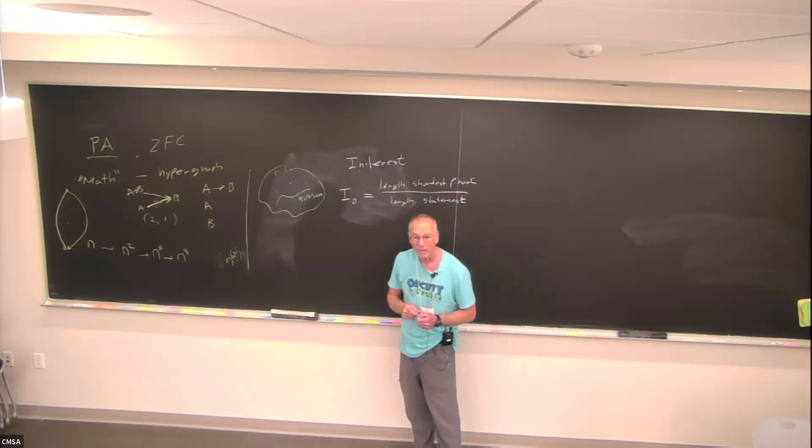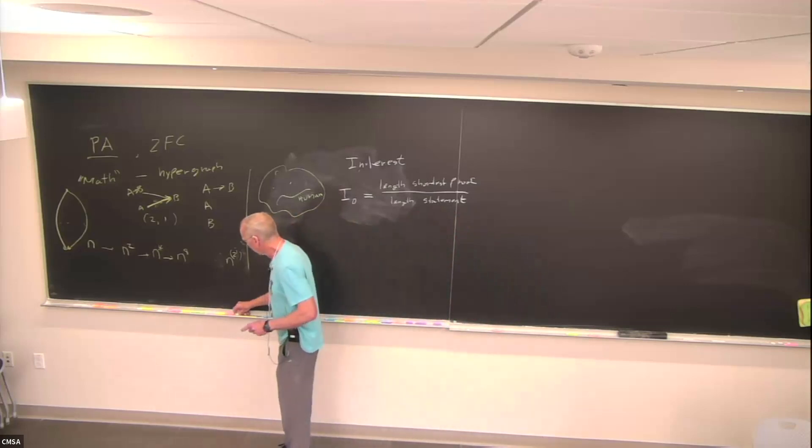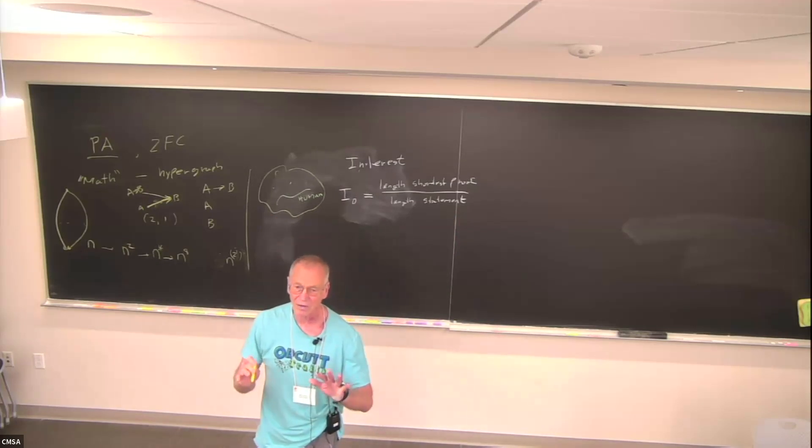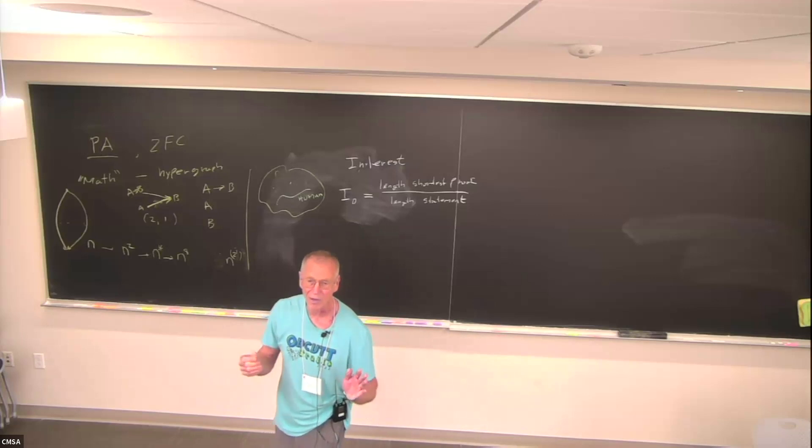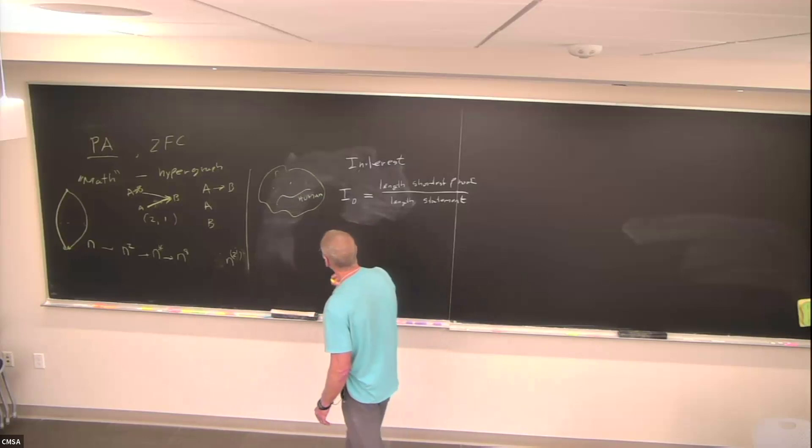So when you say shortest proof, are you assuming that you have potentially complicated definitions within that proof or are you expanding everything out? Very good. Let's think in machine language. The nested definitional structure of mathematics is something I definitely want to come to and quickly, but for right now, let's just think in machine language. We'll write numerator, denominator, just all brutally.